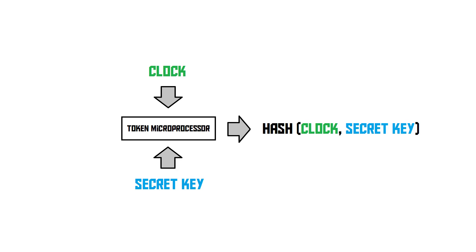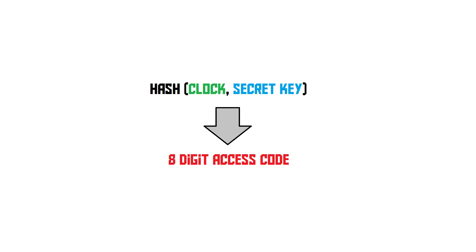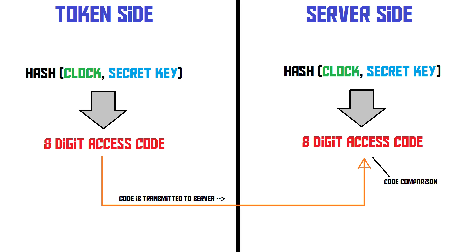At the same time, the user trying to log in presses the button on their security token. The security token does exactly the same thing as the server: it takes the current value of its clock and the secret key it knows, combines those, hashes them, and simplifies the hash into an eight-digit code. This code appears on the screen of the security token, the user types it in, sends it to the server, and the server compares it to the code it generated. If they match, the server knows the user must have the device — because only this device knows the secret key and has the same clock value needed to generate the matching code.